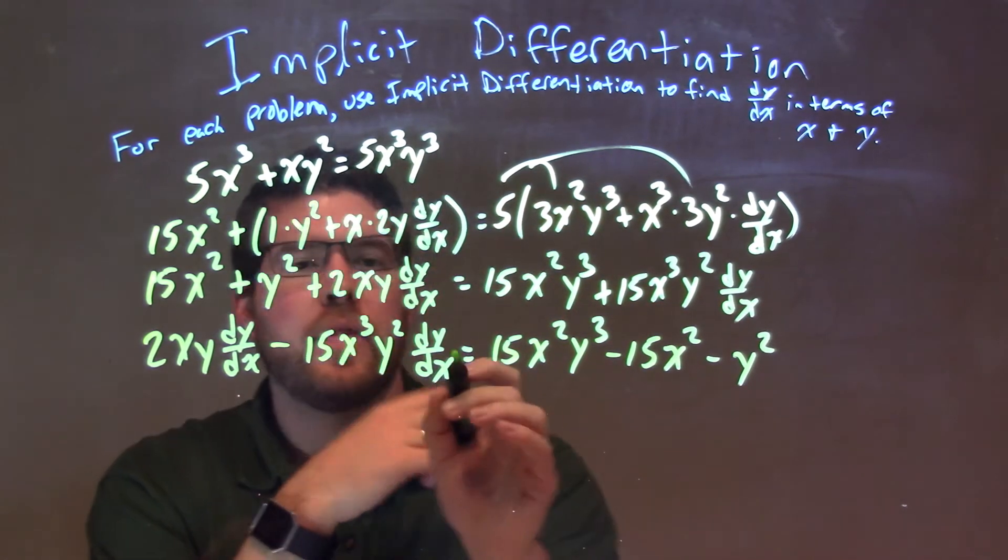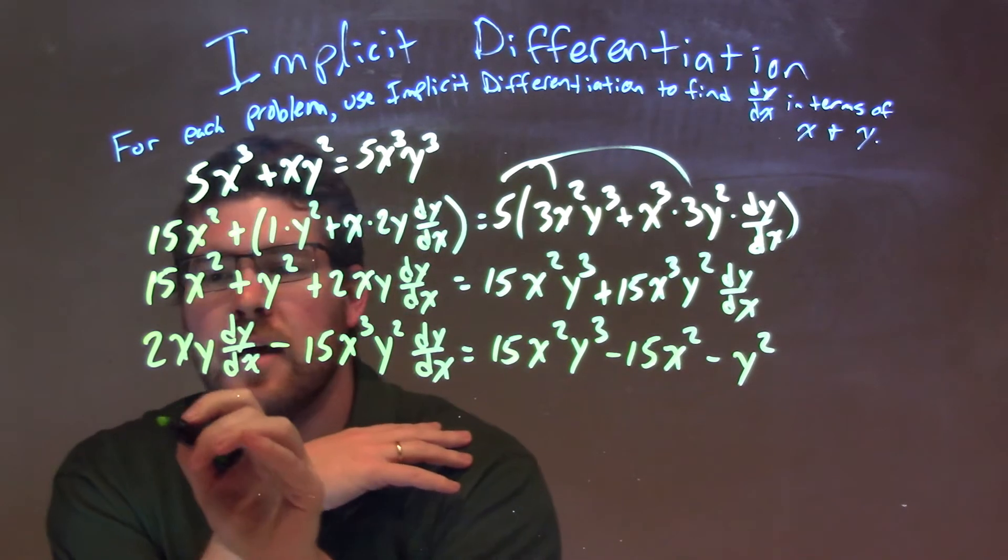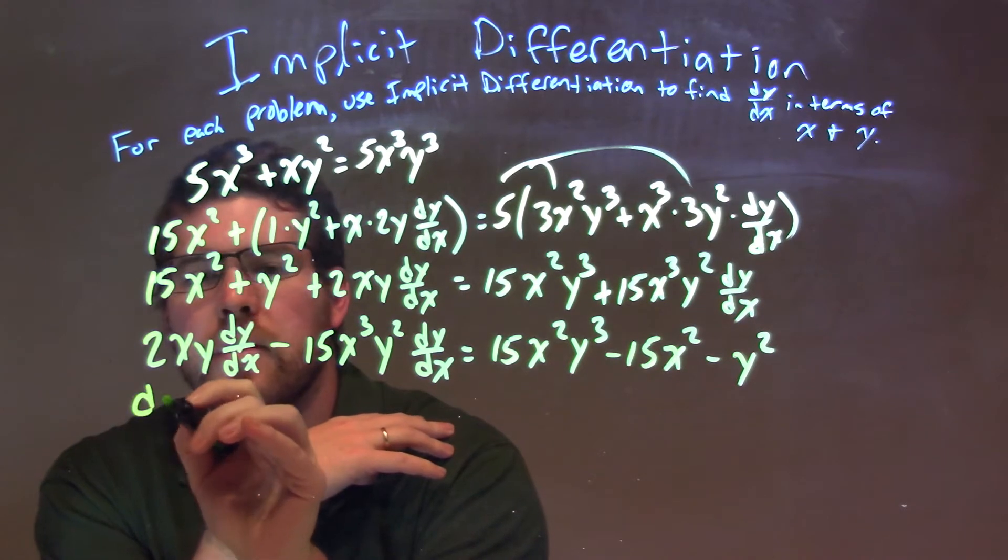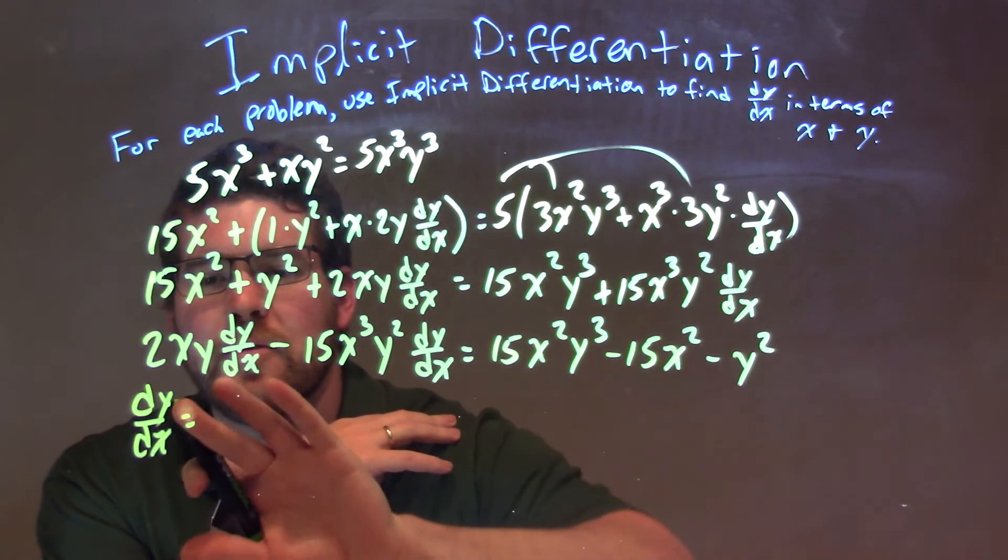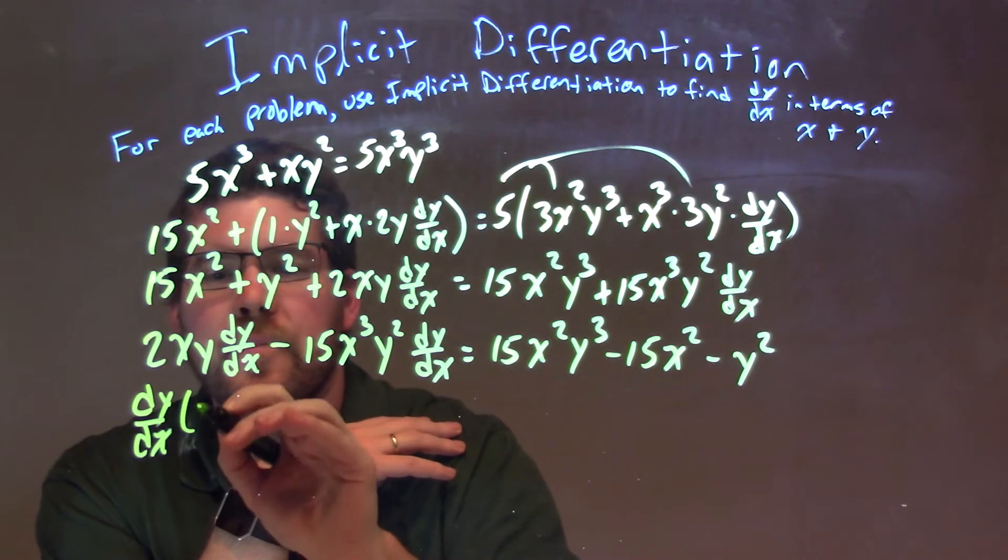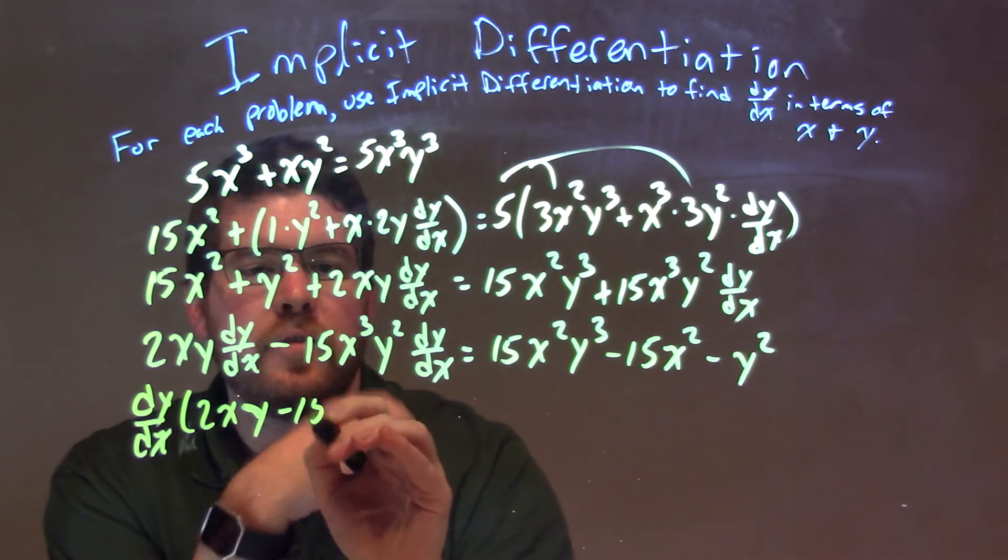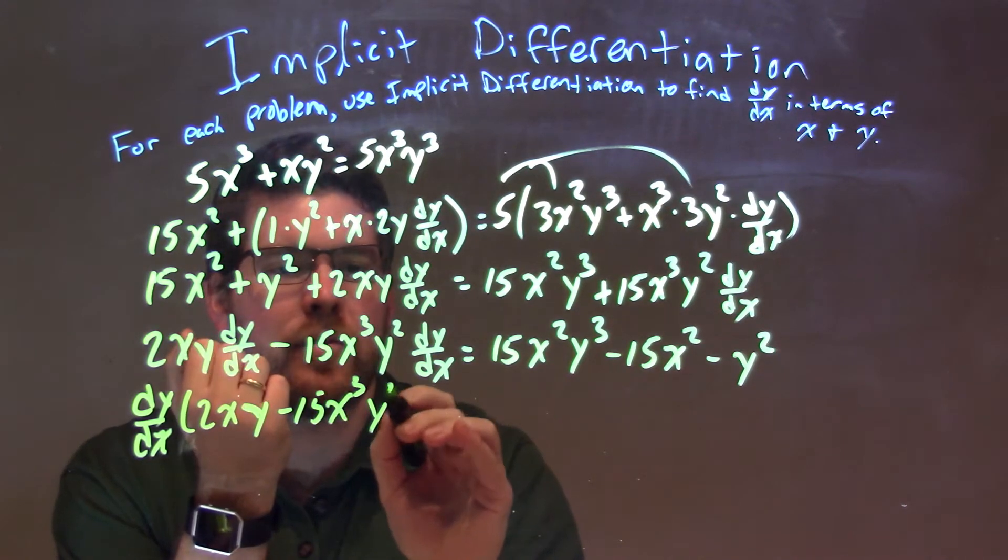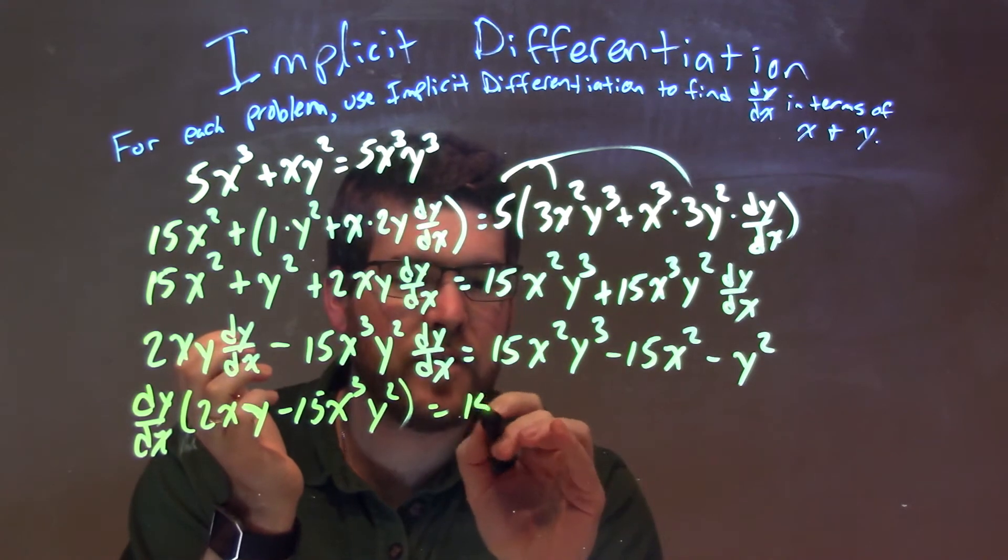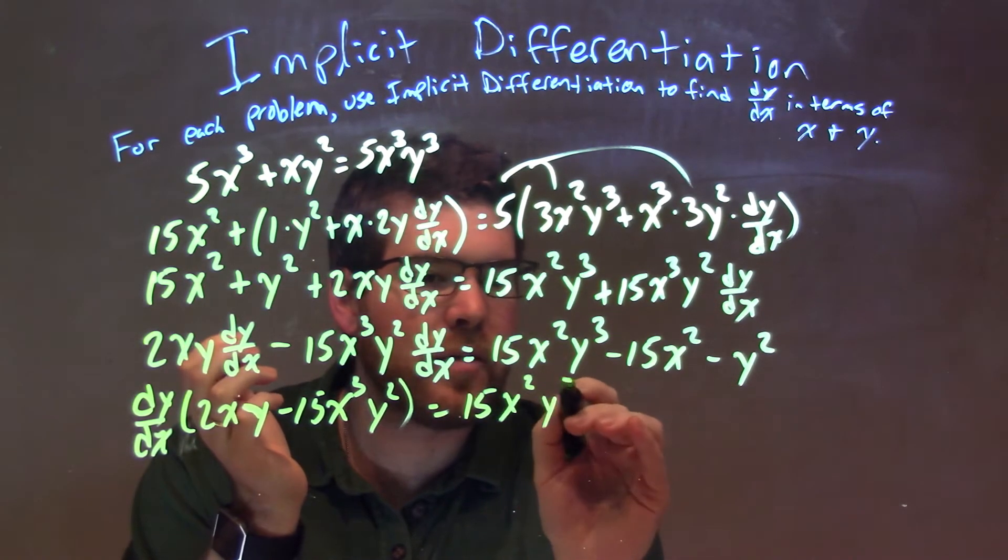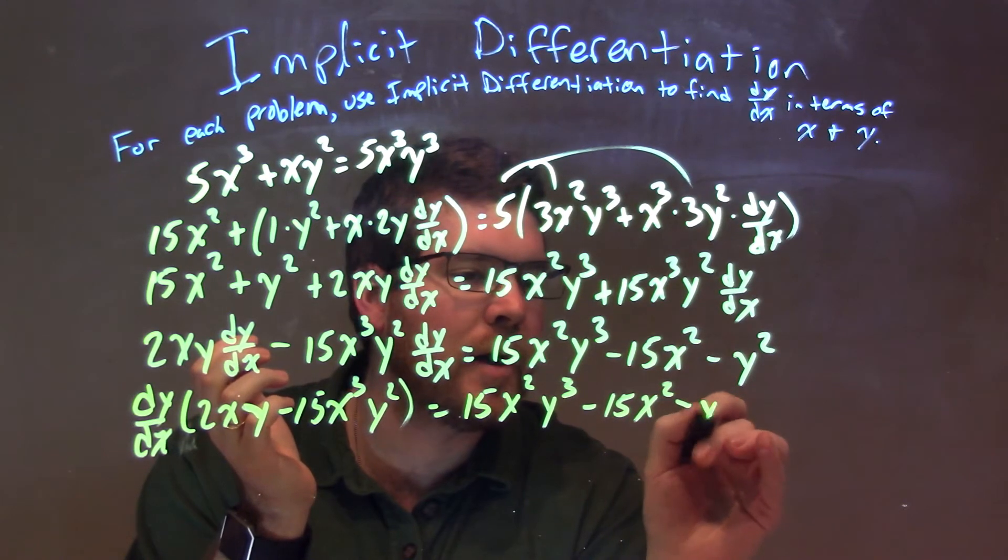So, let's go pull out the constant. dy/dx, it's in both parts, right? dy/dx to both sides, or from both sides, both parts, dy/dx here, is equal to, pulling out multiplied by 2xy minus 15x to the third y squared. And that's equal to the right-hand side, which is 15x squared y to the third minus 15x squared minus y squared.